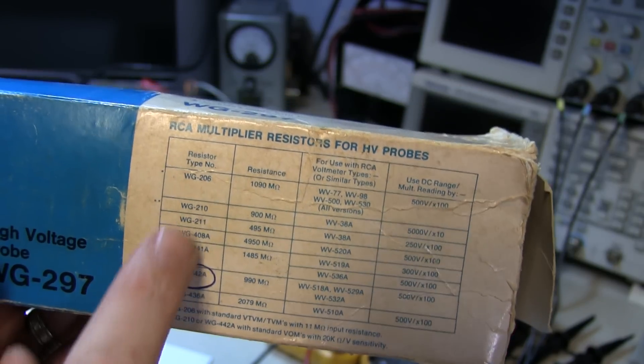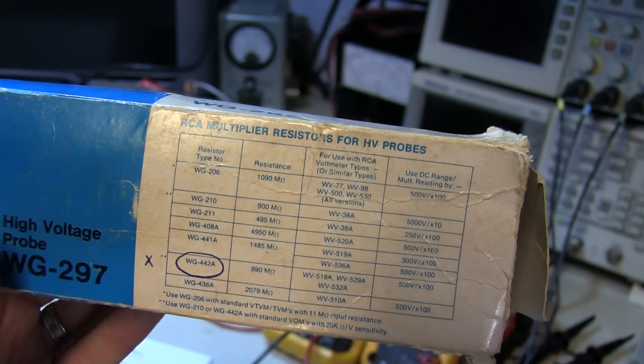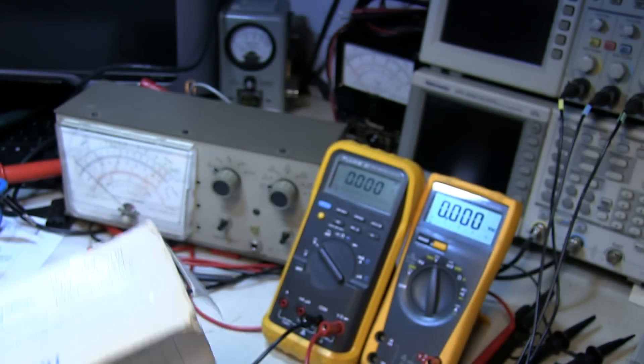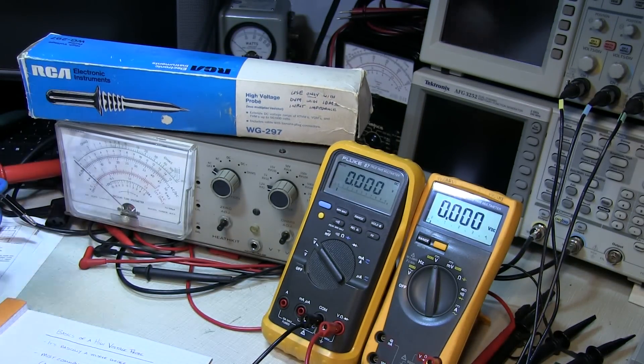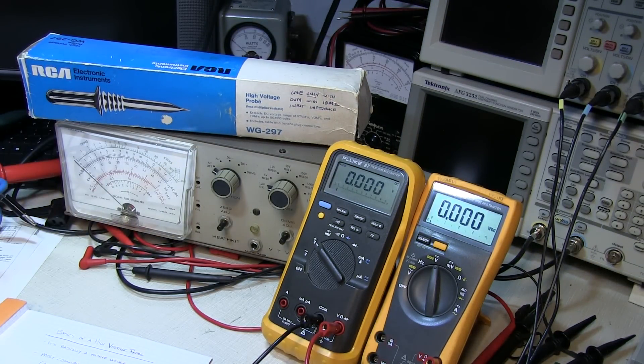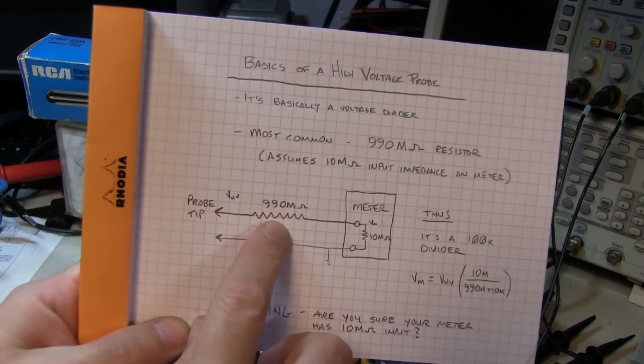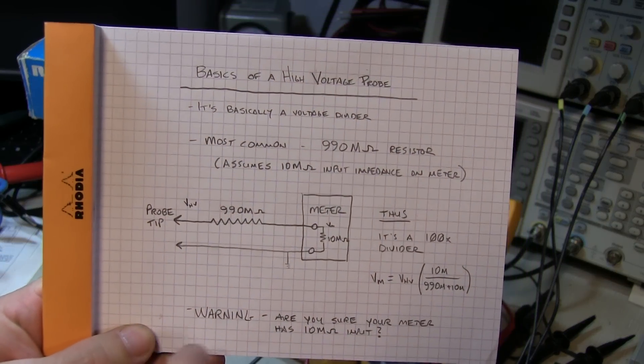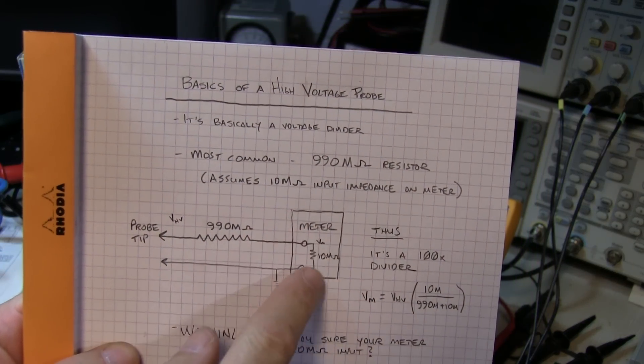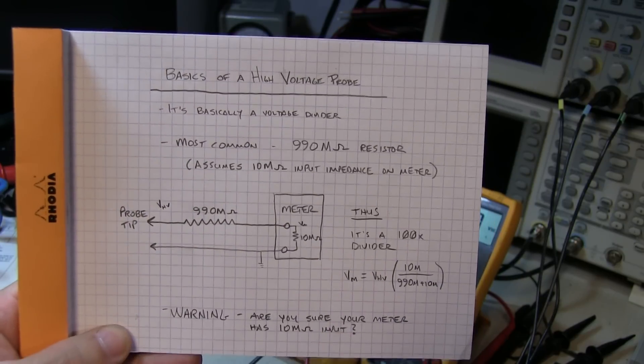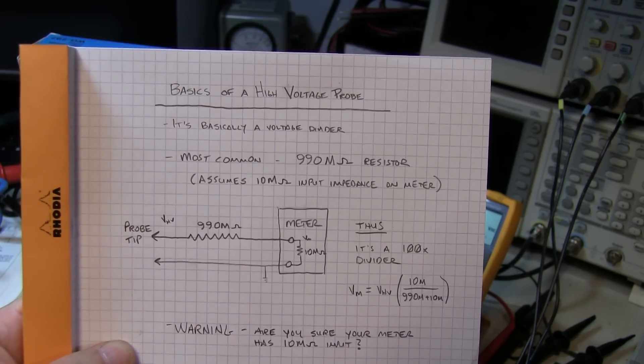So the bottom line here is you do have to be careful if you're going to use one of these probes. You have to be careful about two things. One is, what resistor is that probe equipped with, so you know what that series element is. And then you have to worry about what is the input resistance of my meter. And if you're not sure, you really need to go measure it in order to make accurate measurements.